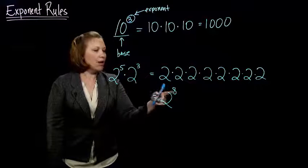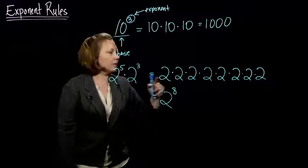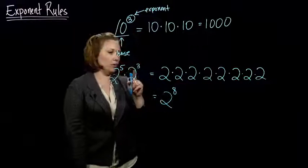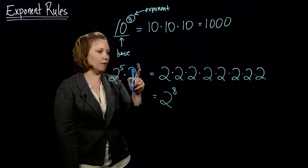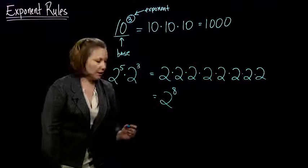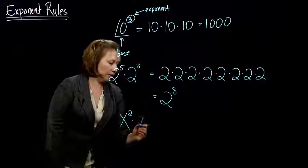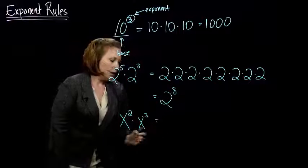But if you see, how is 8 related to 5 and 3? Well, when we write all these out, we count them up, which is the same thing as adding 5 plus 3, which gives us 8. Let's try another one, maybe a little bit more abstract. We'll throw some x's in there, just to make things a little bit more fun.